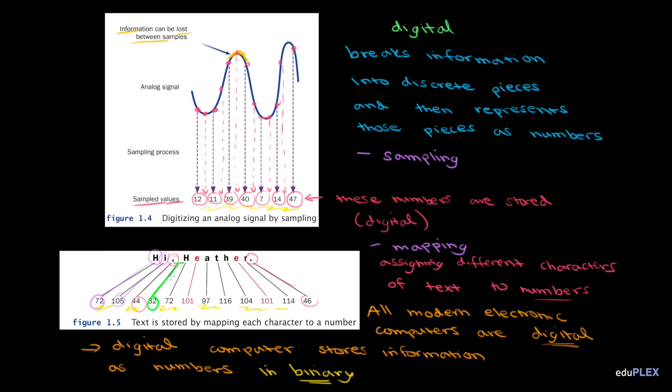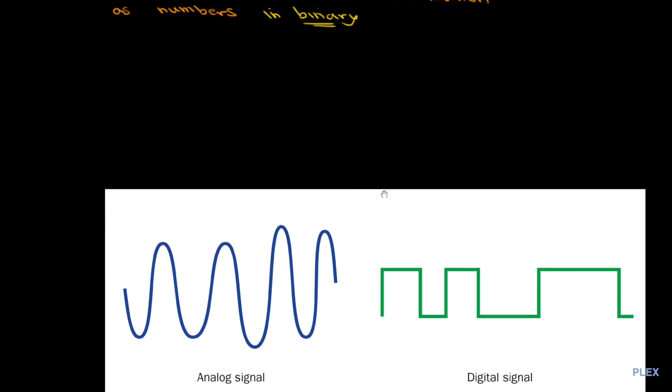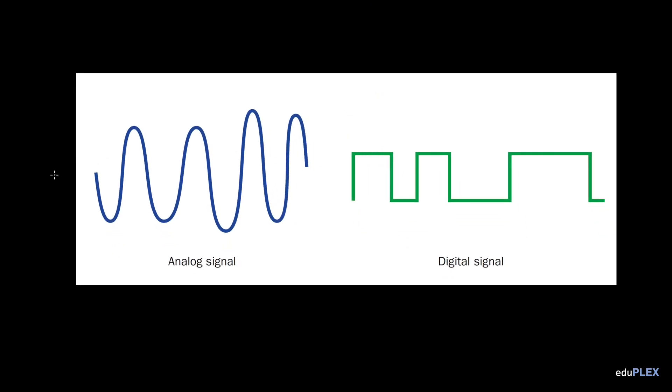So, if binary has only two states, what does a digital signal, which is based off of binary, what does that look like? Well, why don't we go ahead and look at the analog signal and the digital signal next to one another, so we can compare them. And let me go ahead and use my ruler tool to give us some axes, so we can compare the different values we have here.